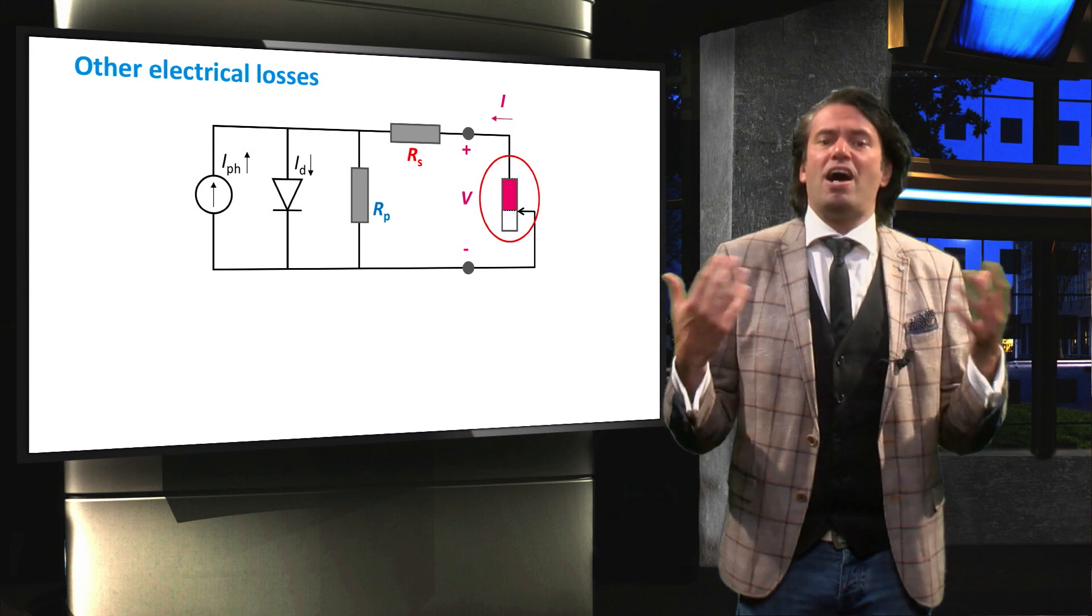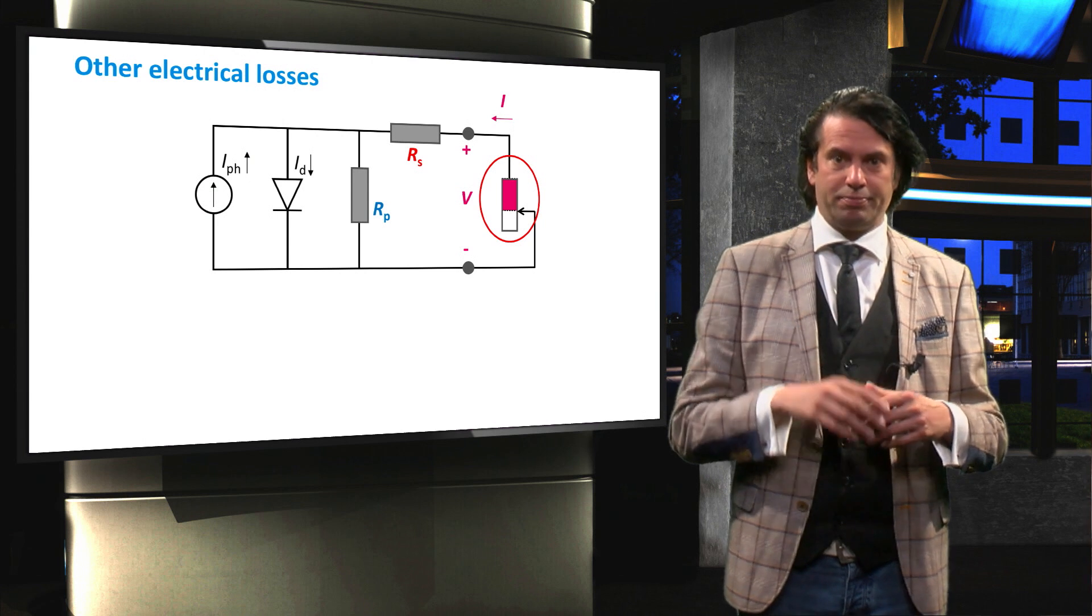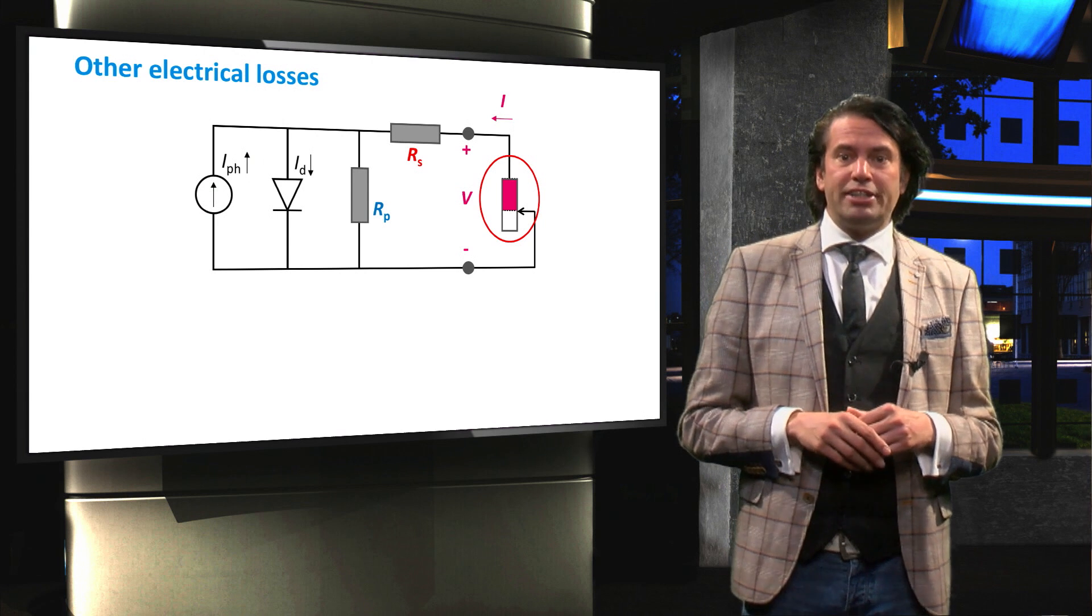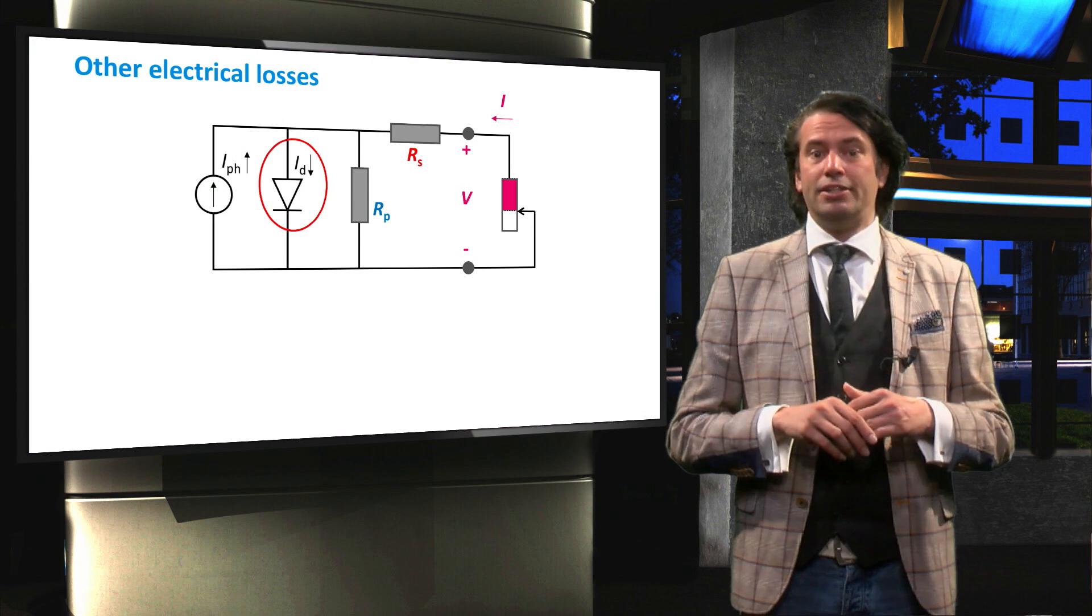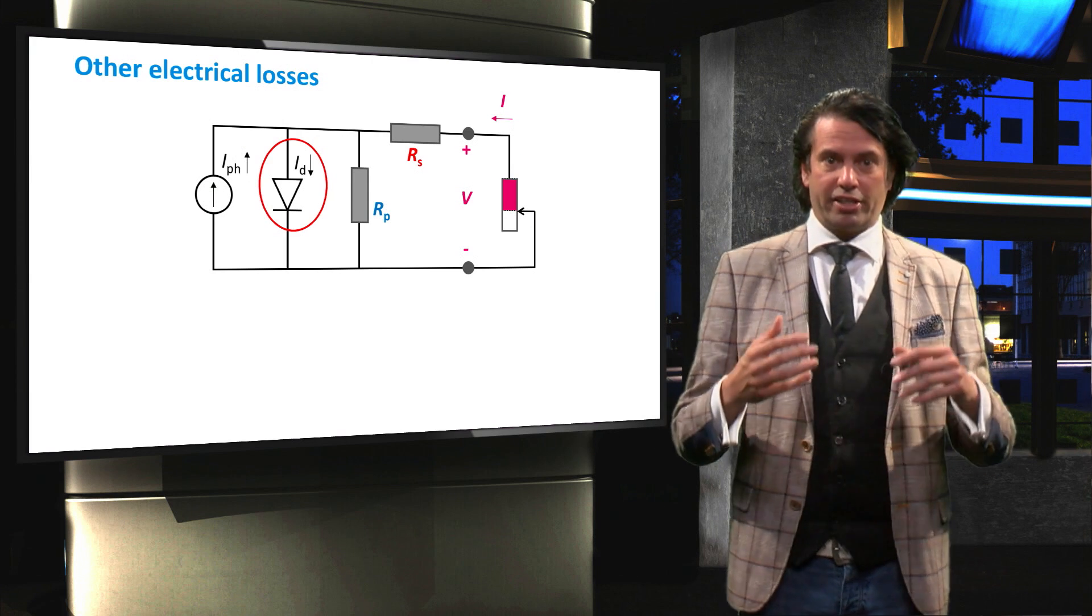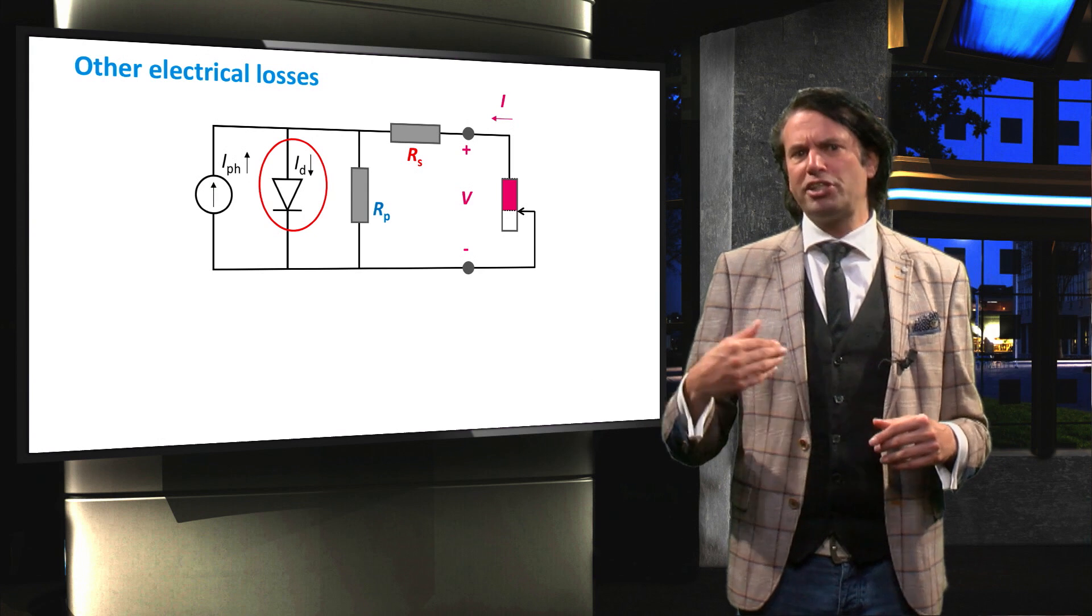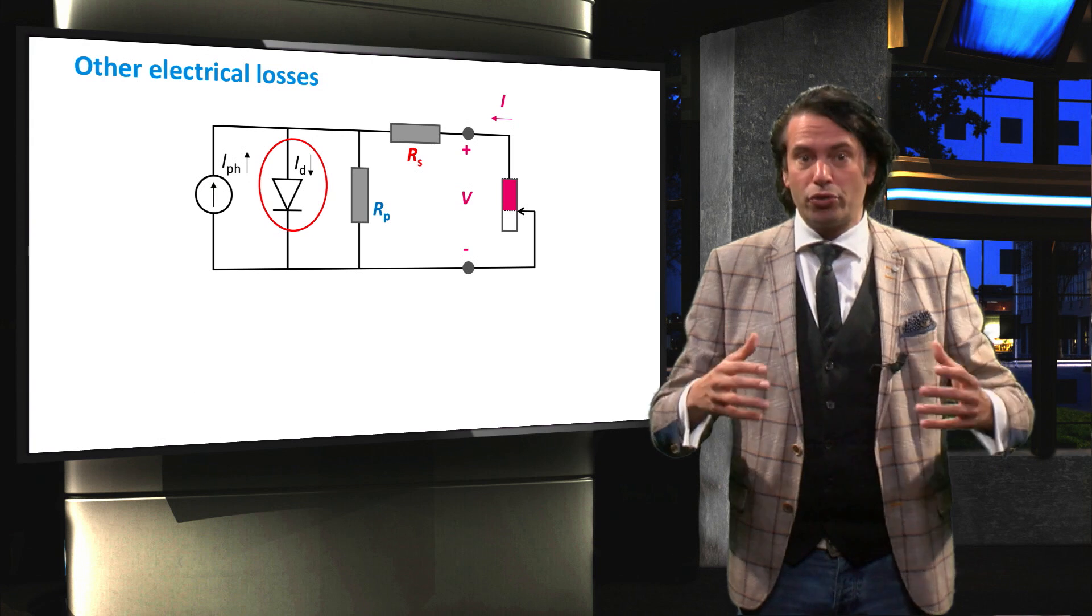Ideally we want to pass the photocurrent to our load represented in purple on the right. We also see a diode with a current I-dark passing through it. This represents the solar cell diode characteristics in the dark. Some current will pass through this diode and this current does not reach the load.